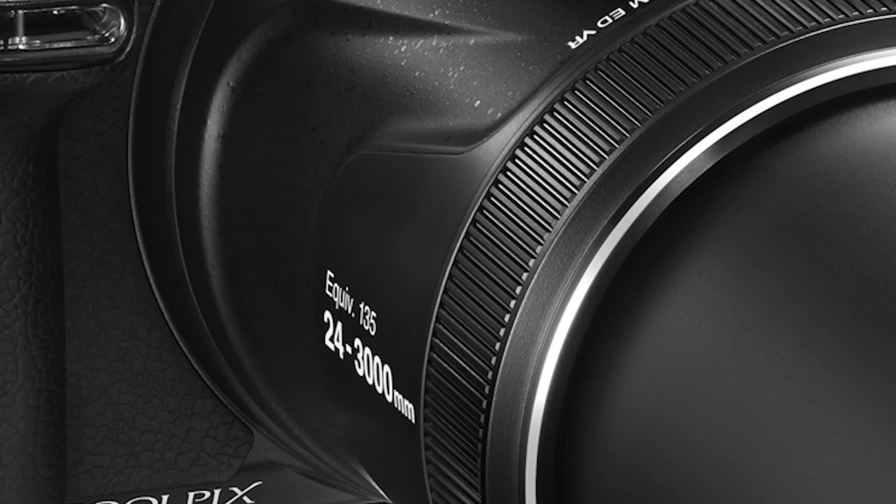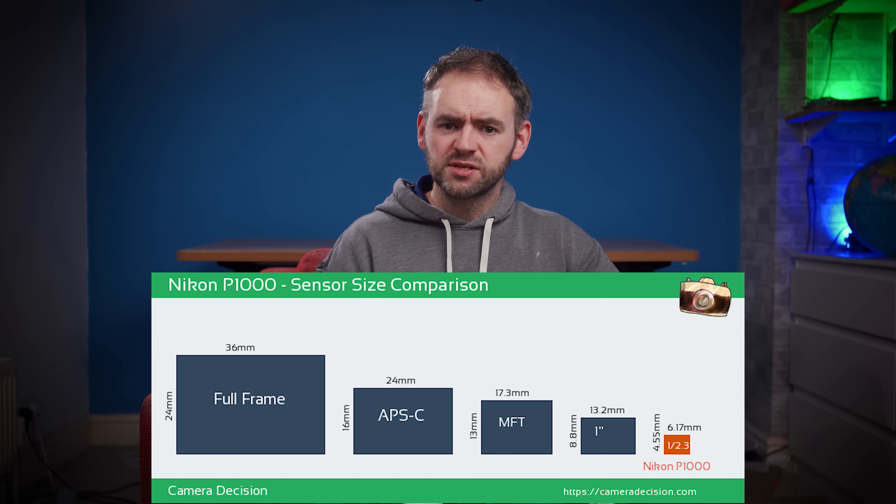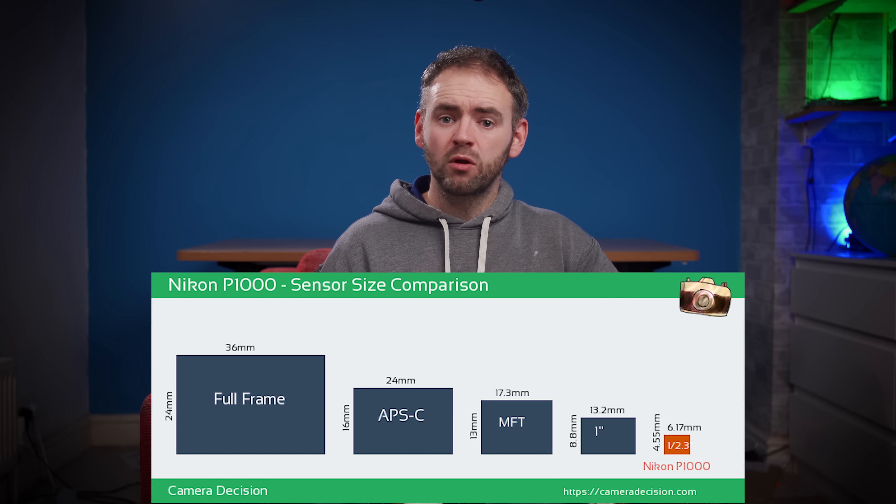For example, the Nikon P1000 is advertised as having a focal length range of 24–3000mm, but that isn't the physical focal length of that lens. The physical focal length is 4.3mm to 539mm. 24–3000mm is just what lens you would hypothetically have to fit onto a 35mm full-frame camera to produce the same fields of view, because the Nikon P1000 sensor is about 30 times smaller than a full-frame. And all of this is relevant to the Moon, I promise.